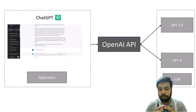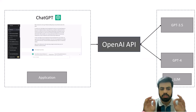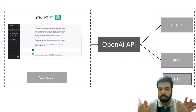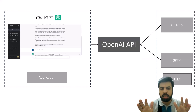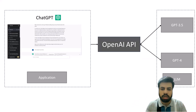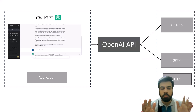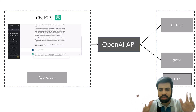ChatGPT is basically an application. ChatGPT internally makes a call to the OpenAI API, and the OpenAI API internally uses large language models which include GPT-3.5 and GPT-4. So ChatGPT is simply an application that sits on top of the OpenAI API.